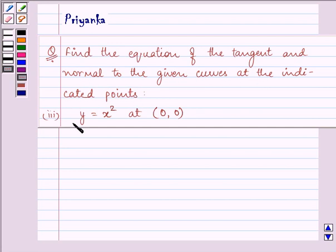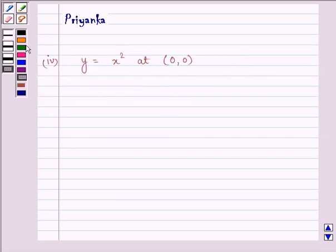Here we are given the equation of the curve as y is equal to x square at the indicated points 0, 0. We are given y is equal to x square.